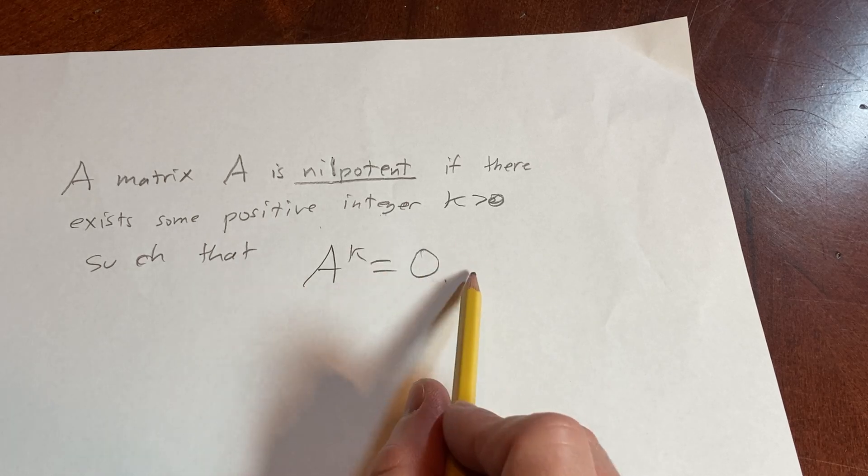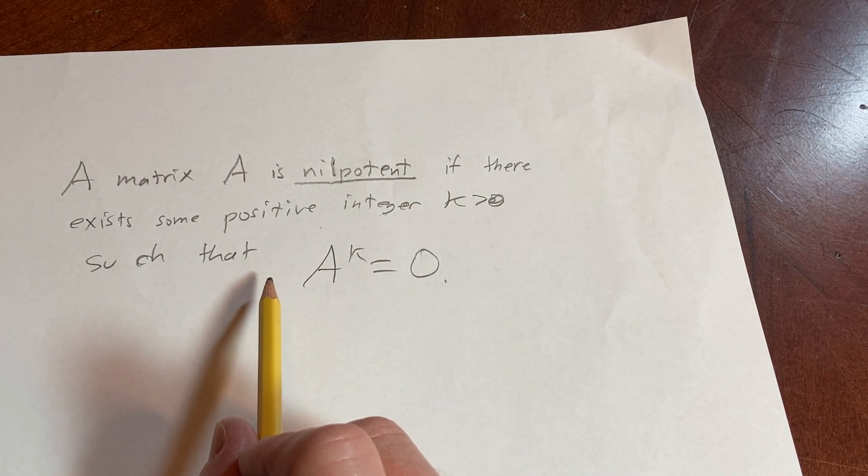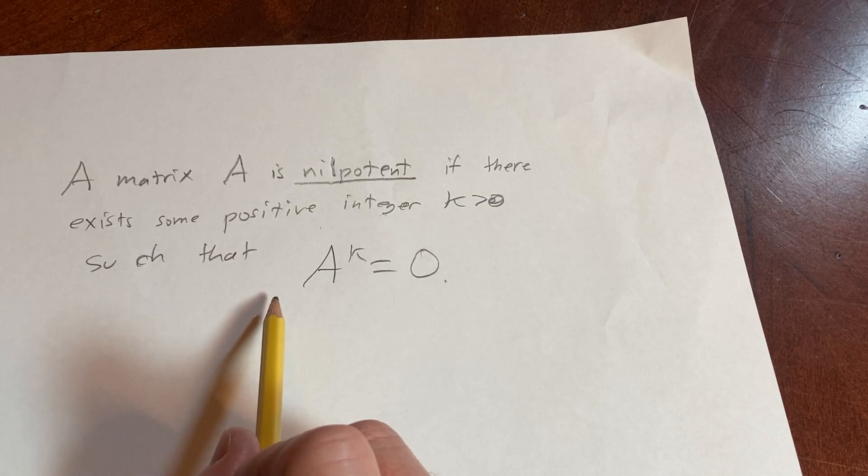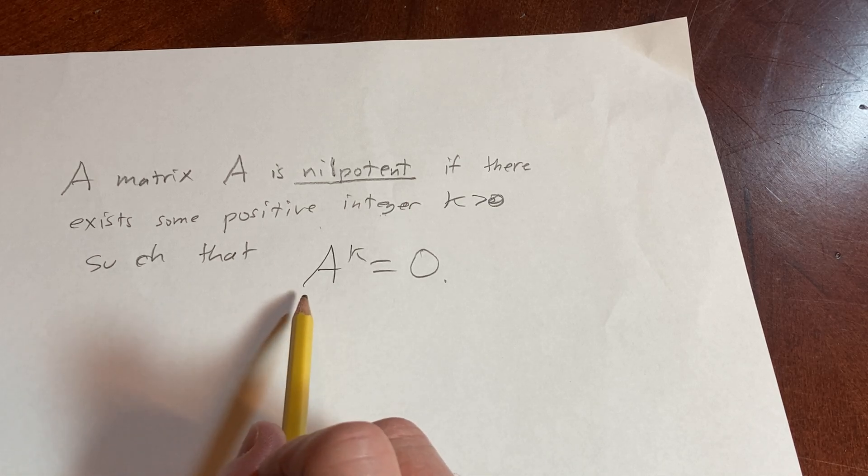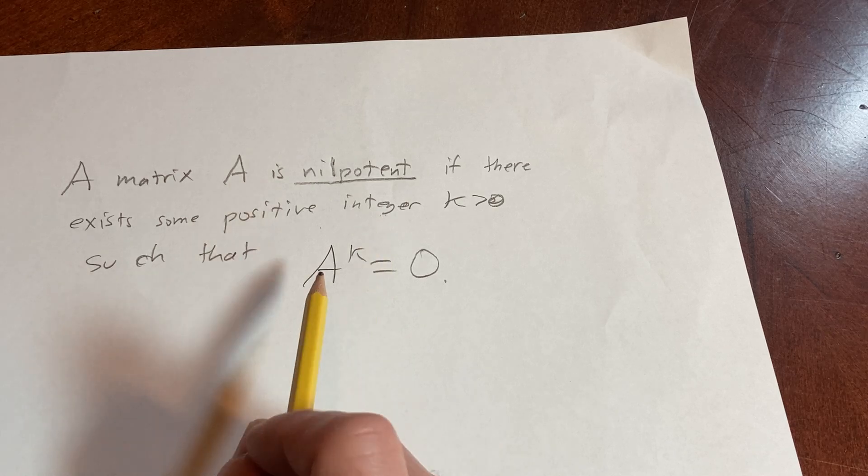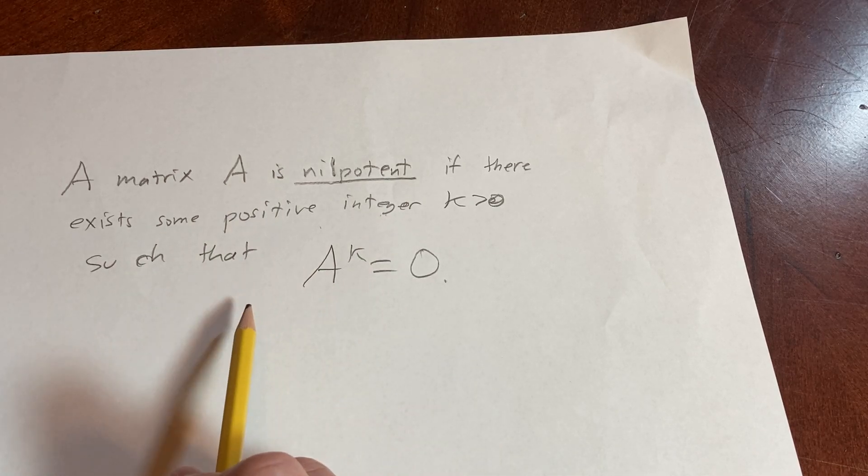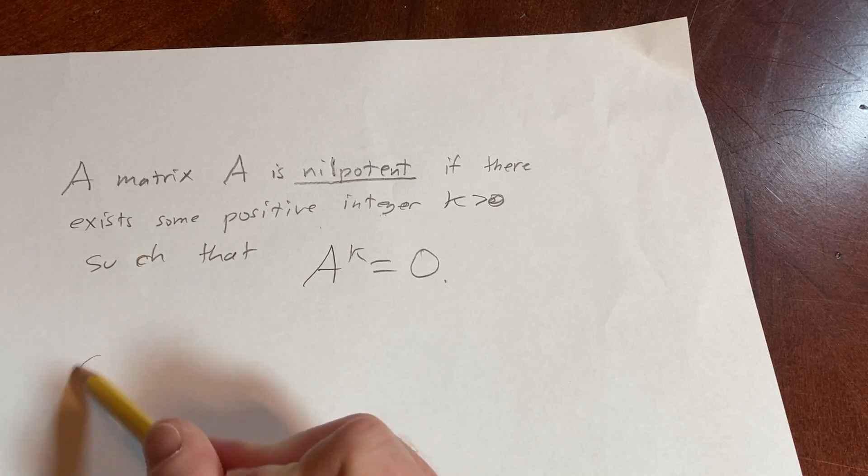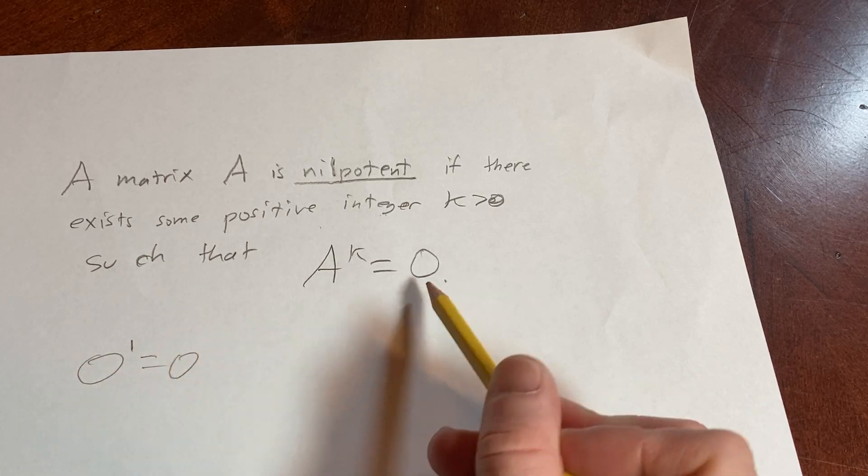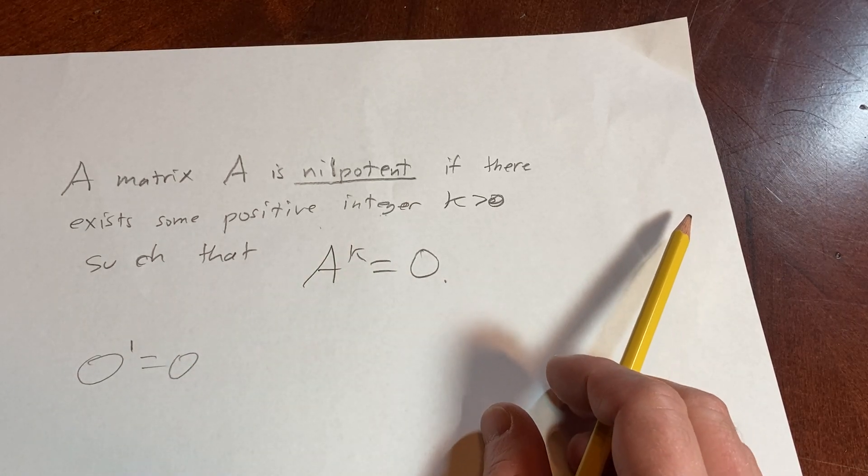to zero, where zero here is the zero matrix. So yeah, pretty cool. A simple example of a nilpotent matrix would be the matrix zero, right? So that would be an example there. You could just take zero to the one, which is just zero, and then you would just get zero. So it's a simple example. Take care.